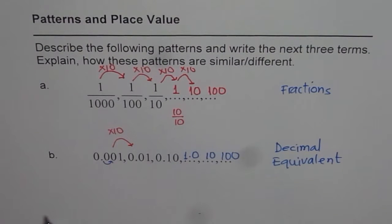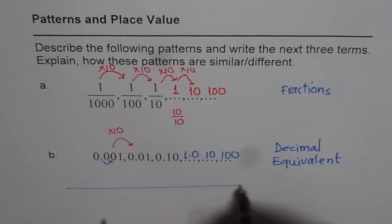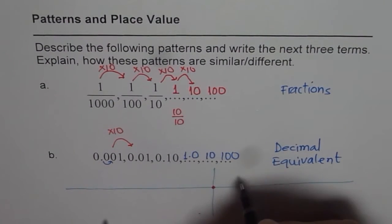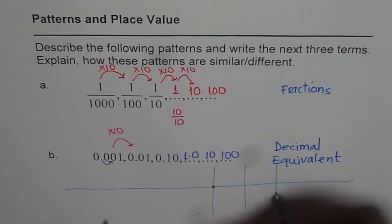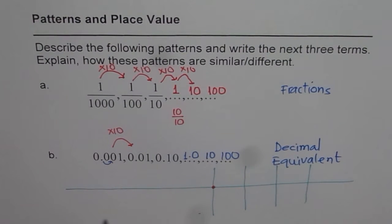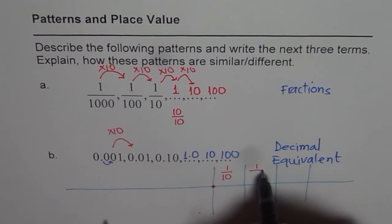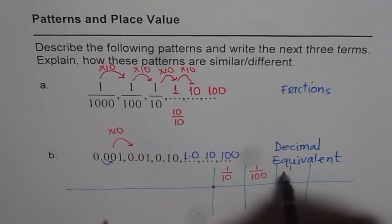So what we have here is kind of understanding of our place value chart. So in a place value chart, what we have is a decimal point somewhere. And to the right side of this decimal point, we have numbers which are 1/10, 1/100, 1/1000, and so on.